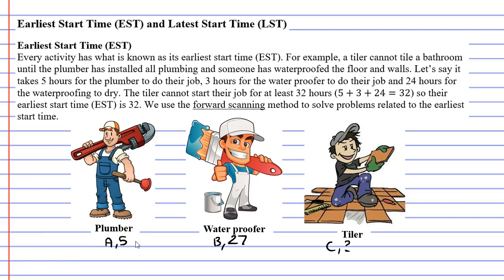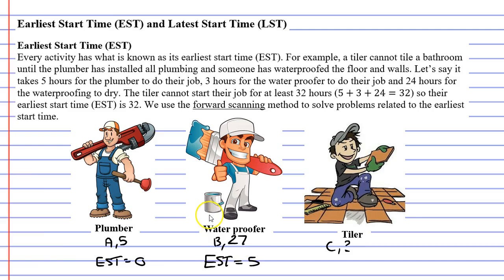Now we'll talk about earliest start time. The plumber can start straight away. So if we were calculating the earliest start time, or EST, for the plumber, it would be zero, meaning the plumber can start straight away. The waterproofer can't start until the plumber has completed their job, and that job takes five hours. So the earliest start time for the waterproofer is five, meaning five hours after the project first started. Now we come to the tiler, who needs to wait for both the plumber and the waterproofer. The plumber takes five hours and the waterproofer takes 27 — when you add them up, you get 32. So the earliest start time for the tiler is 32, meaning the tiler has to wait 32 hours from the start of the project before they can get into their job.